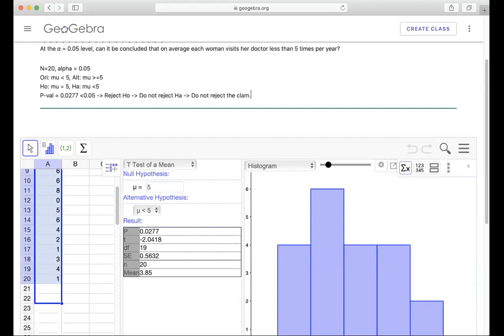This data does not reject the claim, that means we support the claim. Statistically, we can support the claim, so we can conclude that.